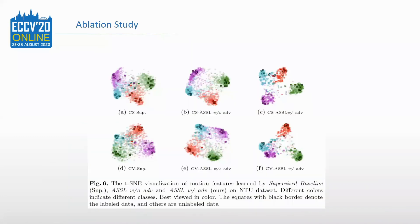We also visualize the feature distributions with TSNE. Compared with STAP, the features of ASSL without adversarial training present tighter distributions, which benefit from self-supervised learning.